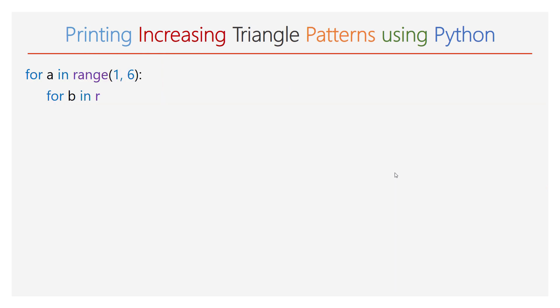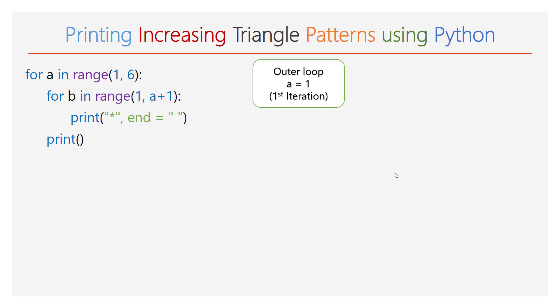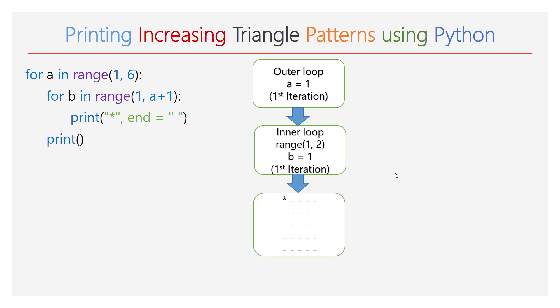Step by step, let us look at how the execution will proceed. During the first iteration of the outer for loop, the value of a will be 1. Then the inner for loop will be executed with a range of 1 to 2, and it will iterate only one time. The print function will execute and one star will be printed. After that, an empty print function is executed and the cursor will enter a new line.